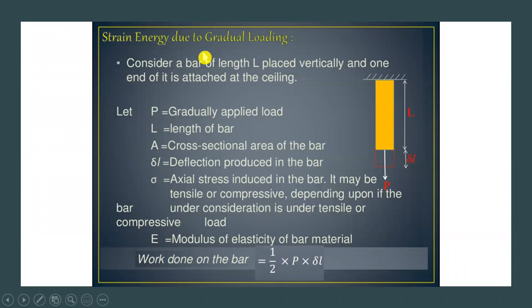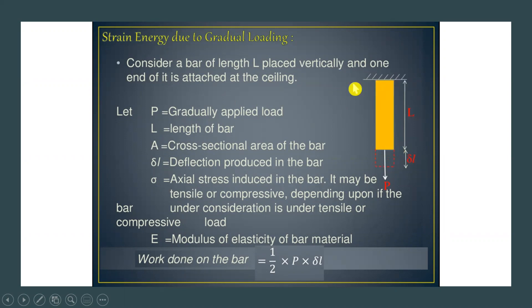Now let us derive the formula for strain energy due to a gradually applied load. Consider a bar of length L placed vertically with one end attached to the ceiling. Let P be the axial load applied gradually from 0 to P, L be the length of the bar, A be the cross-sectional area, dL be the deflection produced by load P, and sigma (σ) be the axial stress induced in the bar.